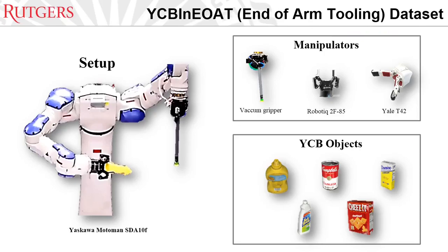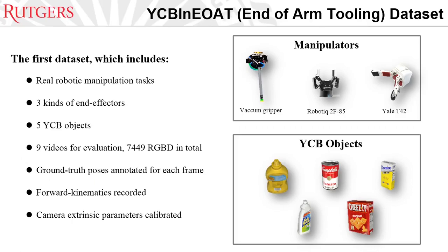To this end, we propose a new dataset for evaluating 6D-pose tracking which we call the YCB-InEAT dataset. To collect this dataset, we used the Yaskawa Motorman SDA, and the videos are collected using various end-effectors including a vacuum gripper, a robotic gripper, and a T-42 adaptive hand. For the manipulated objects, we choose from the YCB video objects since they are widely accessible. This is the first dataset which includes real robotic manipulation tasks, three kinds of end-effectors, five YCB objects, and nine videos for evaluation. Ground truth poses are annotated for each frame, forward kinematics are recorded, and camera extrinsic parameters are calibrated.